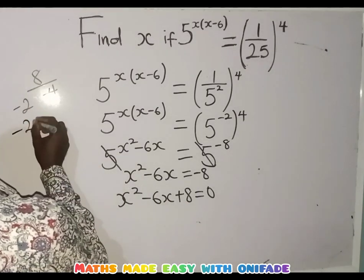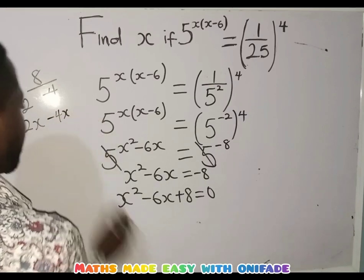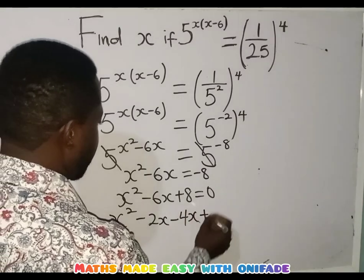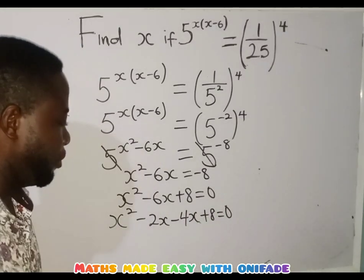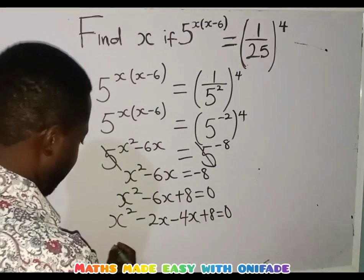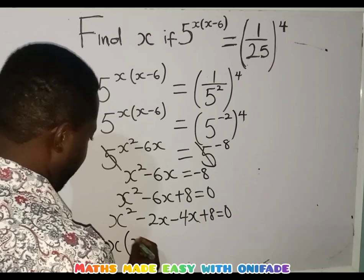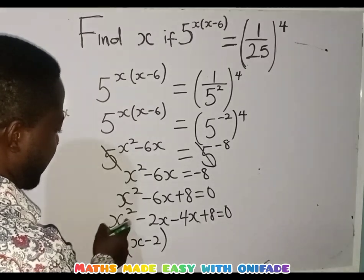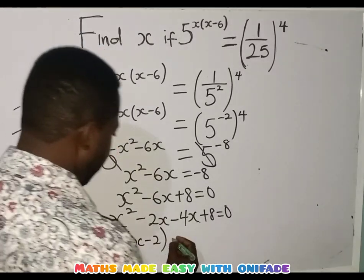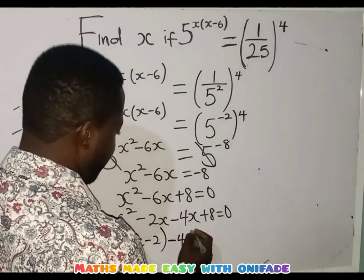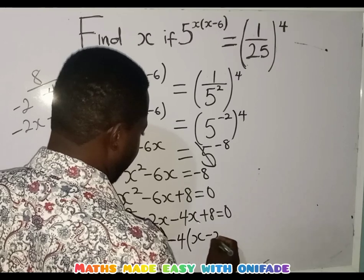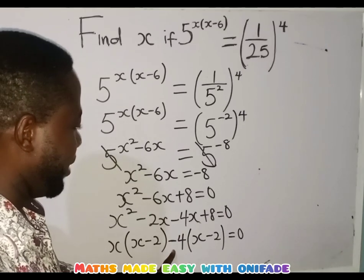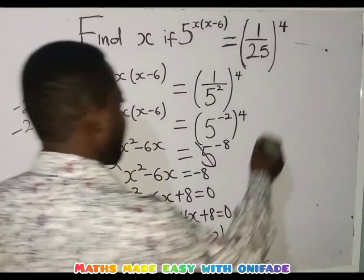So I am going to replace the minus 6x with minus 2x minus 4x. So we have x squared minus 2x minus 4x plus 8 equals to 0. The next thing is to factorize. Factoring out here, x comes outside, giving x minus 2. Whatever you have here must give you this back — x times x is x squared, x times minus 2 is minus 2x. Then factoring the second group, minus 4 comes outside the bracket, giving x minus 2, equals to 0. Checking: minus 4 times x is minus 4x, and minus 4 times minus 2 is plus 8. So this is correct.